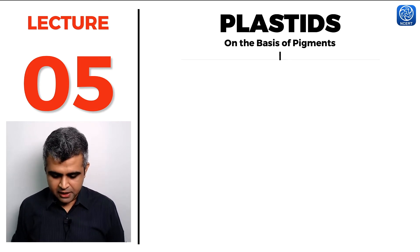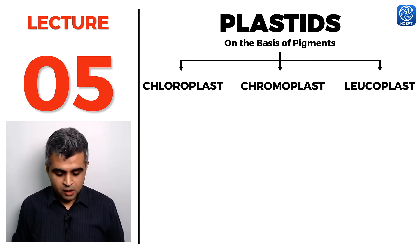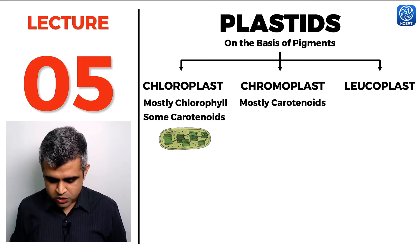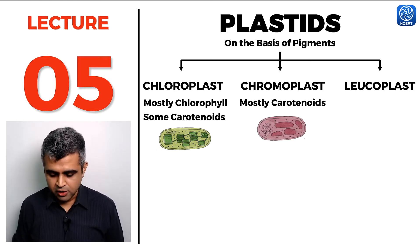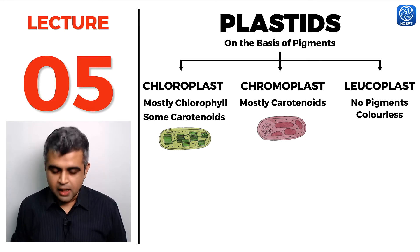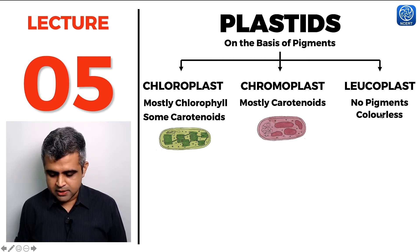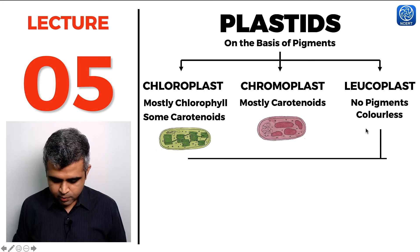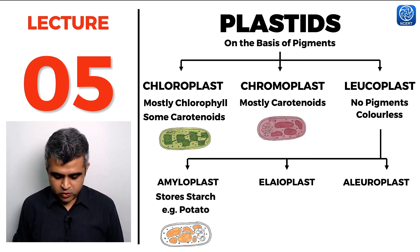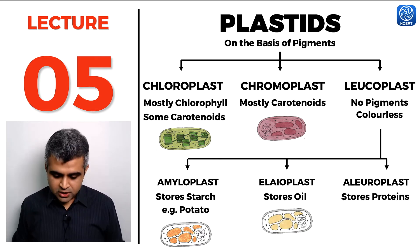The three plastid groups are chloroplast, chromoplast, and leucoplast. Chloroplasts contain mostly chlorophyll and some carotenoids. Chromoplasts contain mostly carotenoids and appear orangish-reddish. Leucoplasts appear whitish, are colorless, and are primarily for storage. Leucoplasts are further classified into amyloplasts — storing starch, as in potatoes — elaioplasts — storing oils and fats — and aleuroplasts — storing proteins.